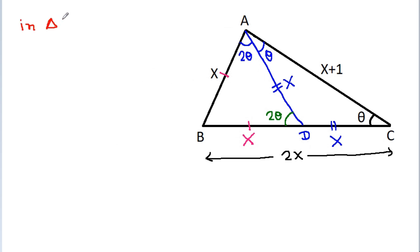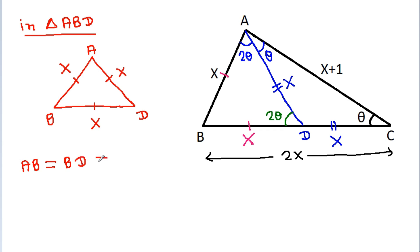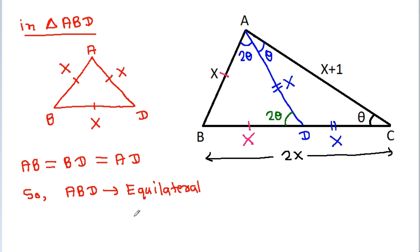Now in triangle ABD: AB is x, BD is x, and AD is x. So AB is equal to BD, that is equal to AD. Therefore triangle ABD will be equilateral.